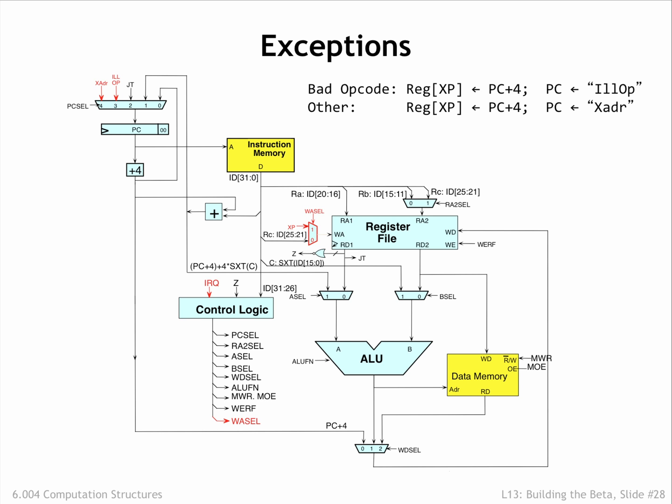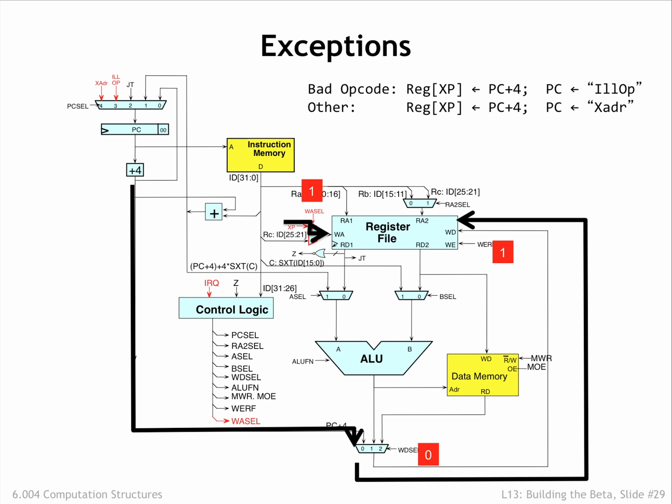The remaining two inputs of the PC_sel MUX are set to the constant addresses for the exception handlers — in our case 4 for illegal operations and 8 for interrupts. Here's the flow of control during an exception. The PC+4 value for the interrupted instruction is routed through the WD_sel MUX to be written into the XP register, while the control logic chooses either 3 or 4 as the value of PC_sel to select the appropriate next instruction that will initiate the handling of the exception.